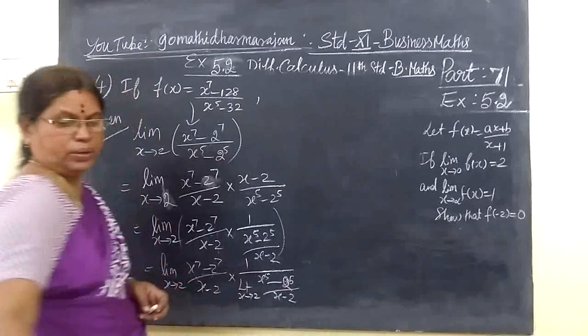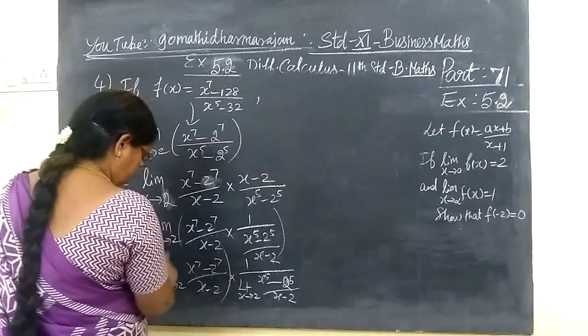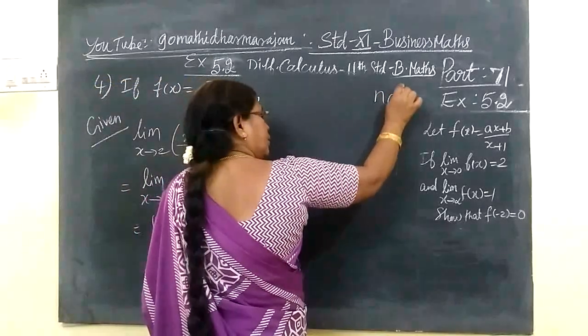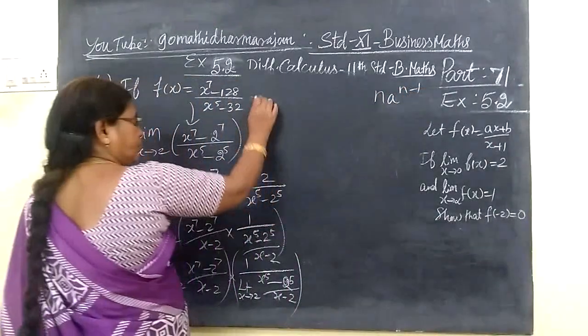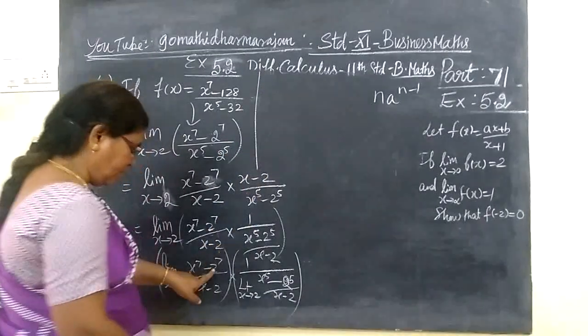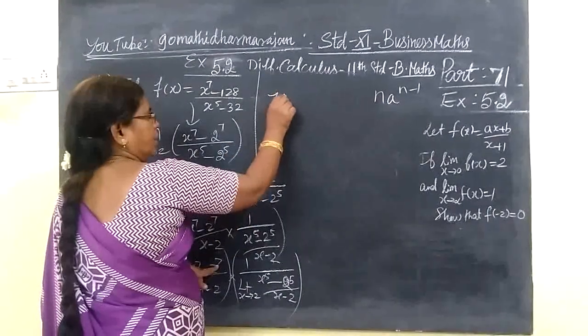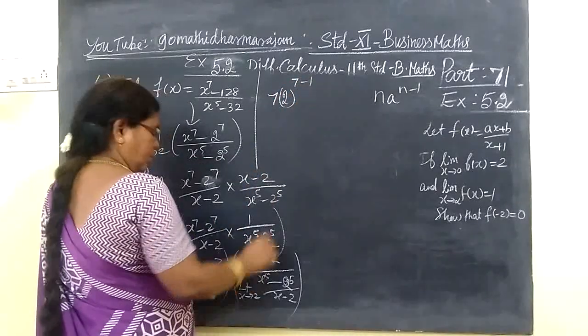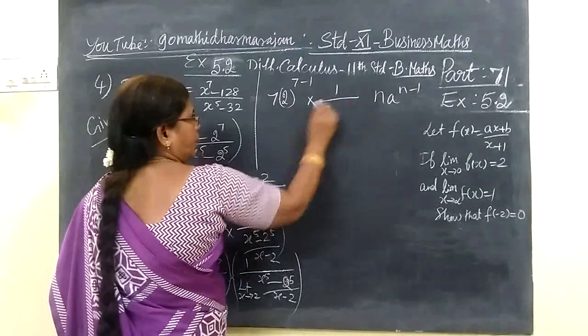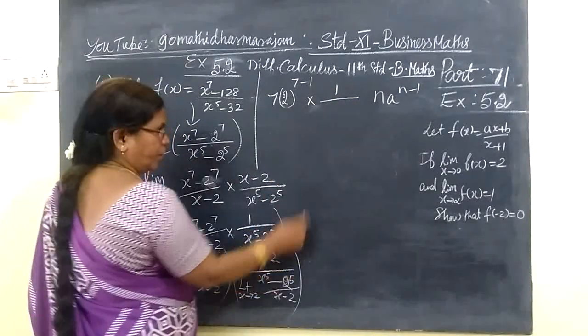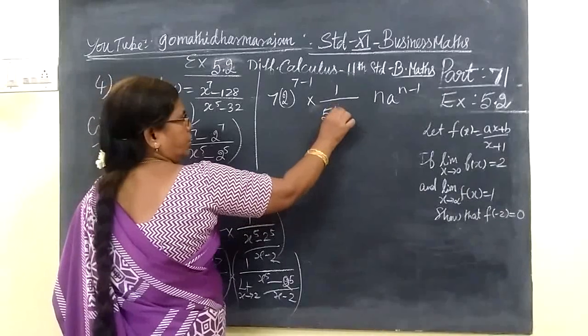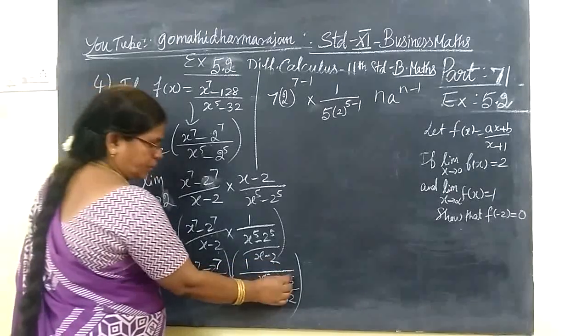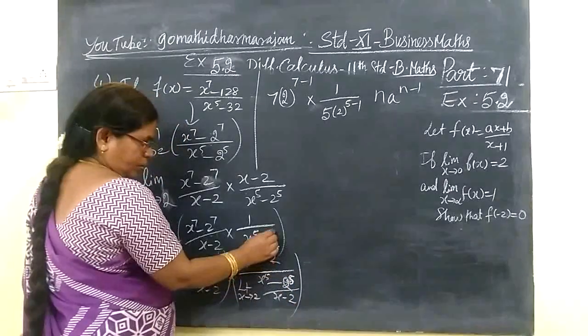So just find the value. Now if you apply the limit, the formula is n into a power n minus 1. So n will be 7, a will be 2, n into a power n minus 1. That is 7 into 1 by, now n is 5, 5 into a power 5 minus 1. This is n.